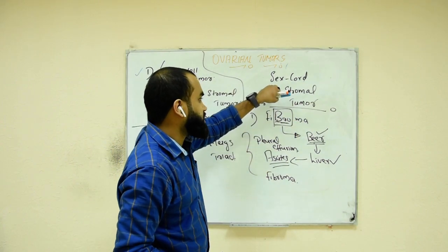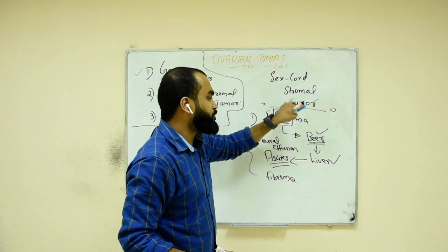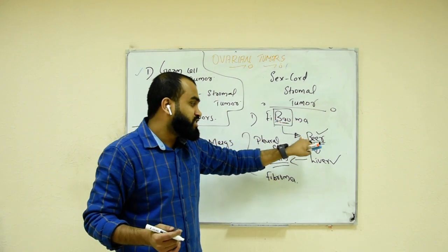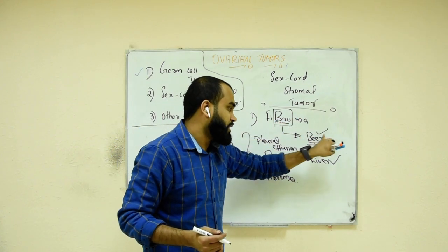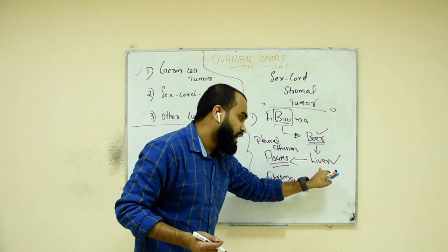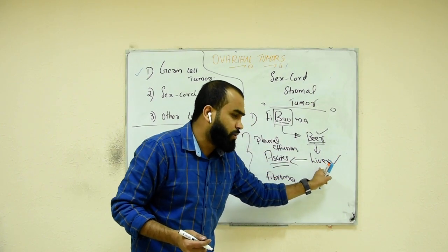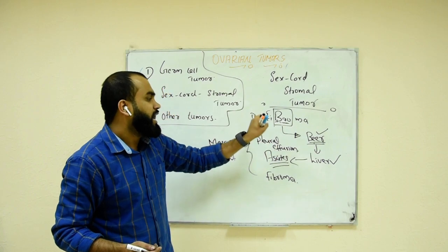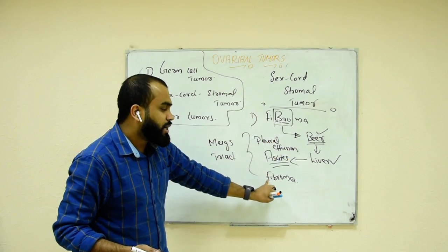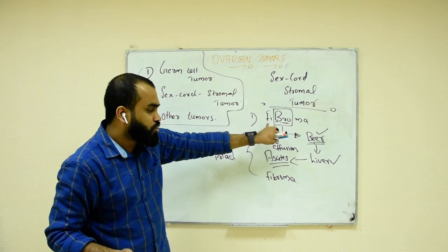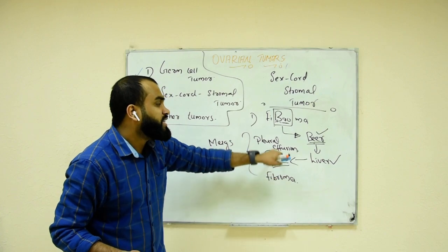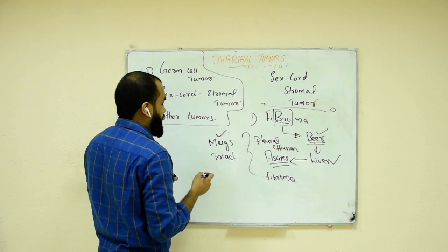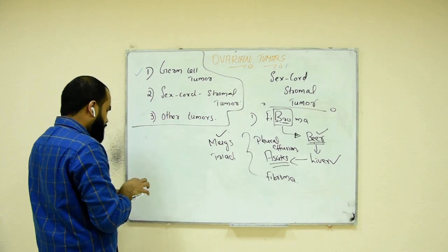To summarize: fibroma is a sex cord stromal tumor. Remember — if you see ascites, pleural effusion, and the ovarian tumor together in a question, this combination is Meigs' triad, pointing to fibroma.